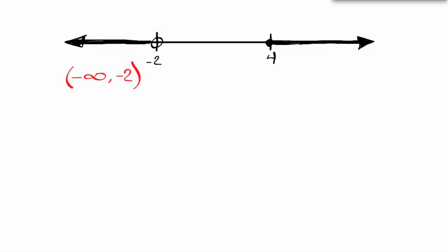This right-hand side here, I would describe as it starts at 4, goes up to infinity. Now, it actually includes 4 because it's got a closed dot. So I'm going to put a square bracket. And you always put a round bracket on infinity.